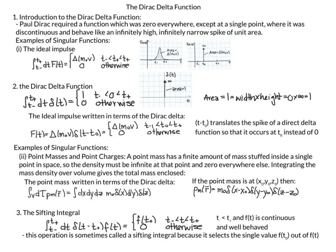The Dirac Delta function on its own isn't very useful, but in an integral and with different examples that we will show, they allow you to solve problems that you otherwise wouldn't be able to. Paul Dirac developed this function, which was zero everywhere except at a single point, where it was discontinuous and behaved like an infinitely high, infinitely narrow spike of unit area. These types of functions are often called singular functions.